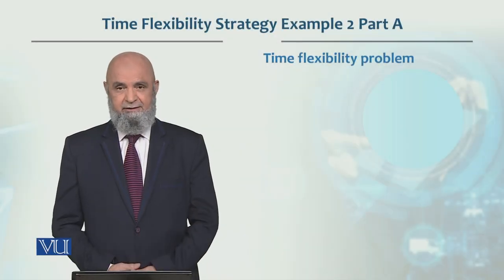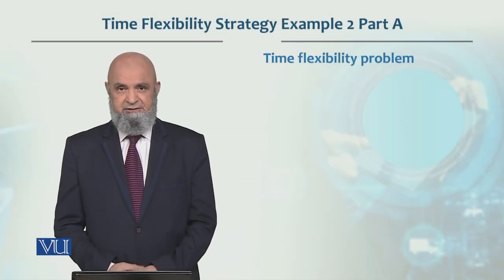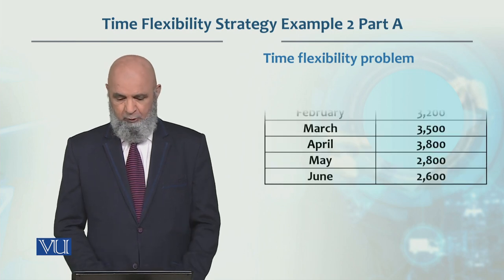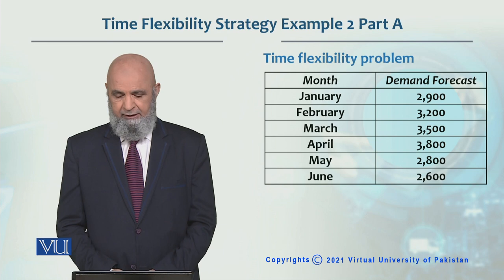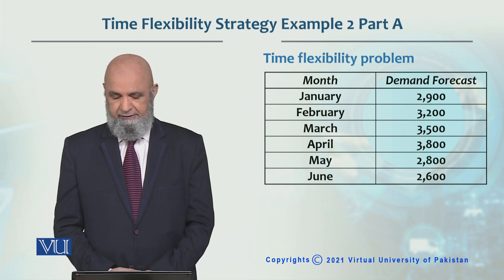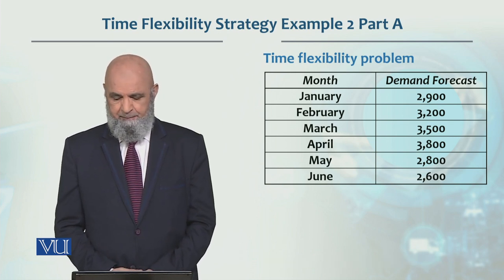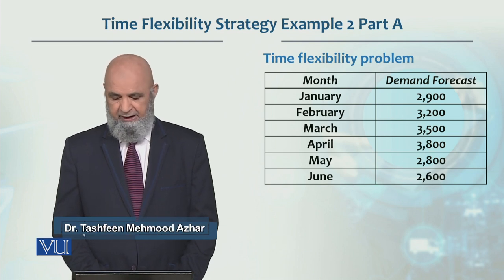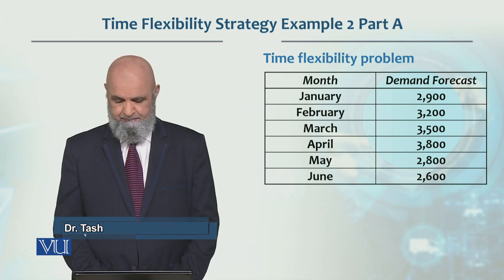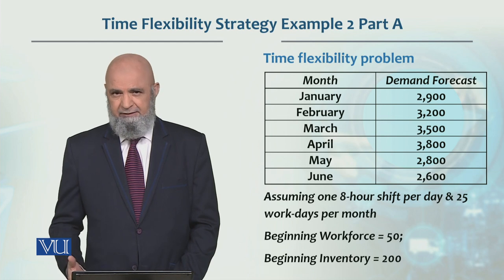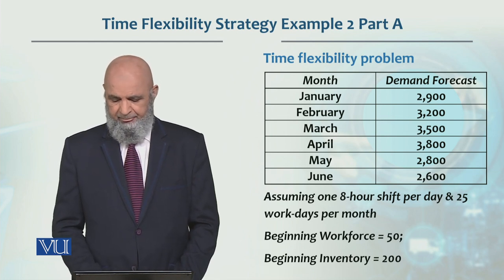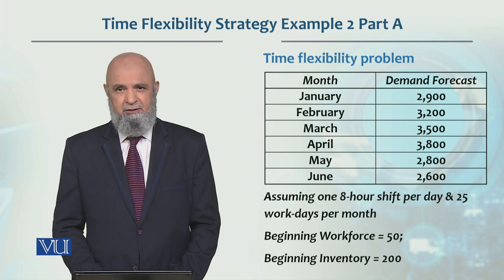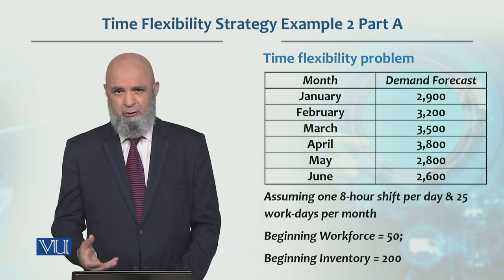Let's look at another example of time flexibility strategy. The problem demand is: January 2900 units, February 3200 units, March 3500, April 3800, May 2800, and June 2600. There is an 8-hour shift and 25 production days per month.